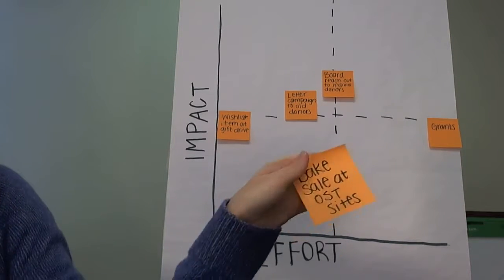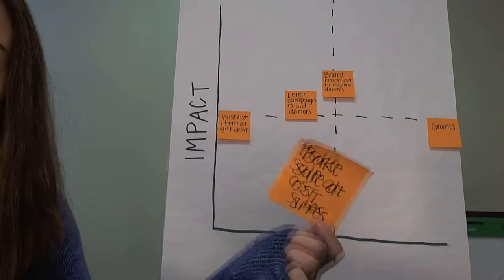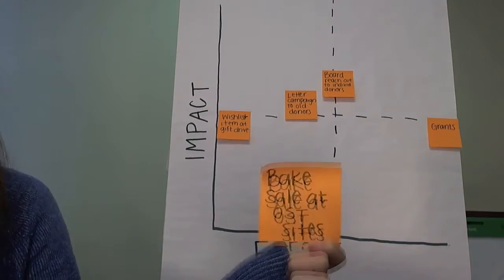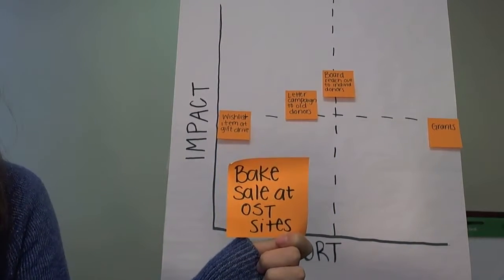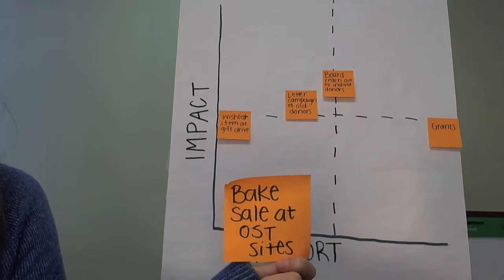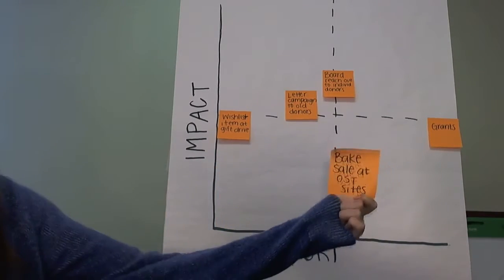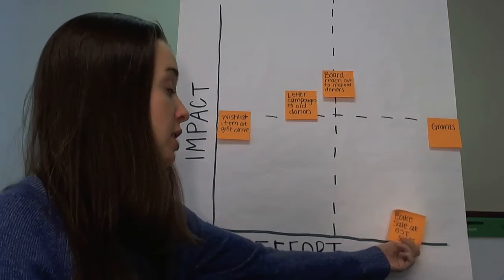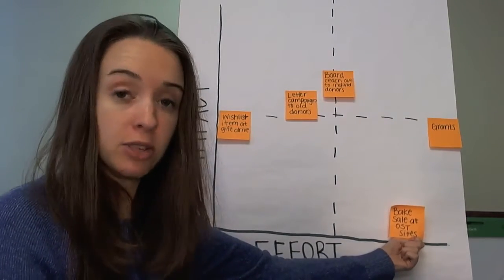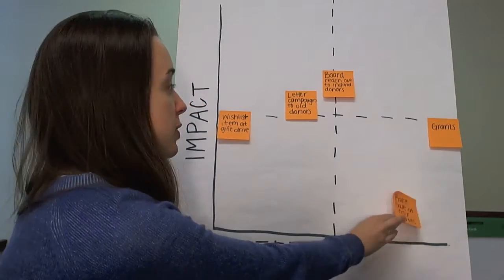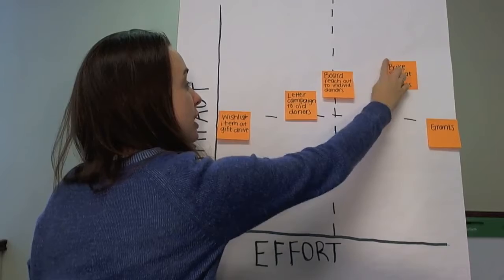Then there's a suggestion of a bake sale at some of the after-school sites, assuming this is a multi-site organization. In the past these bake sales have been very successful — some special events are coming up and the school has agreed to let the programs do a bake sale. The after-school programs said they'd love to use the funds towards the computer lab. That will be pretty high effort on the site directors and coordinators, but the impact could be pretty high — past bake sales have made upwards of $500, which is a couple of laptops.